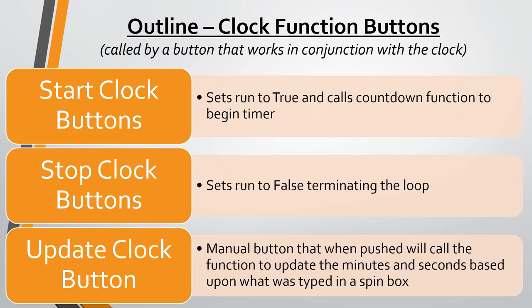The start clock button sets the run variable to true, which allows the loop to start, and then calls the countdown function to begin the timer. The stop clock button sets run to false, which terminates the loop where it stands. Each loop function has a condition that says if run is true, keep going; if not, stop. The values in the spin box are also updated as the clock counts down, which is done using the delete and insert functions in tkinter.